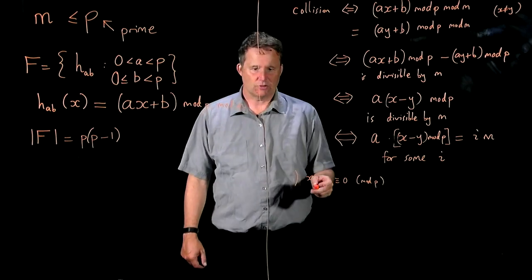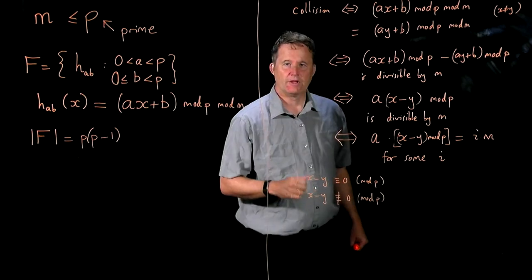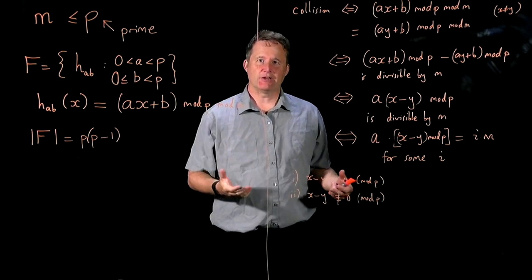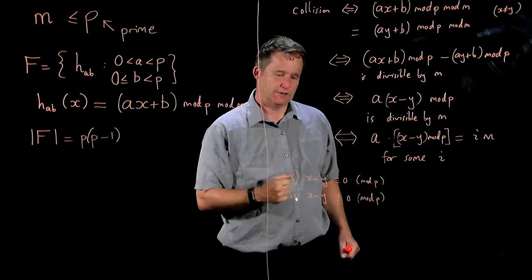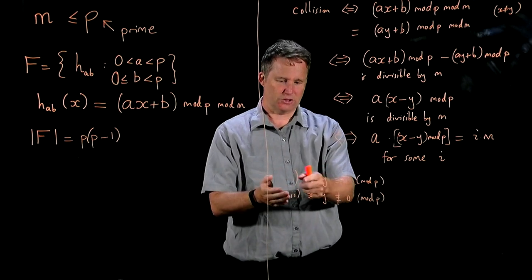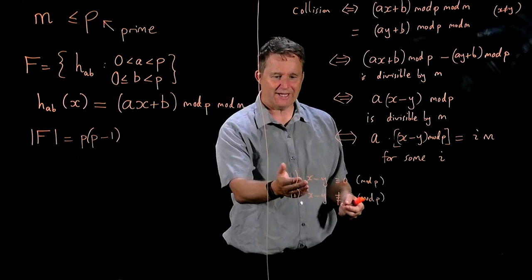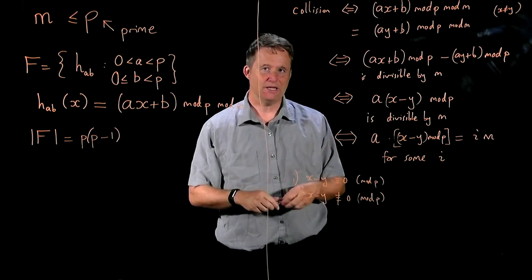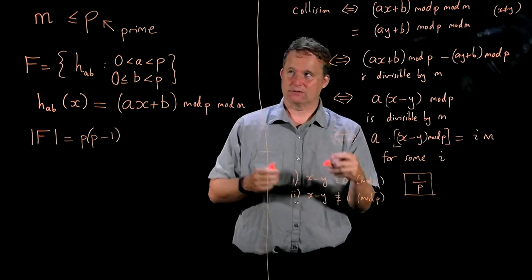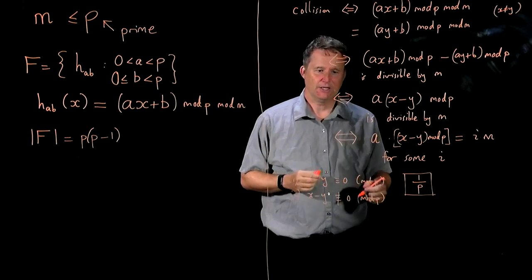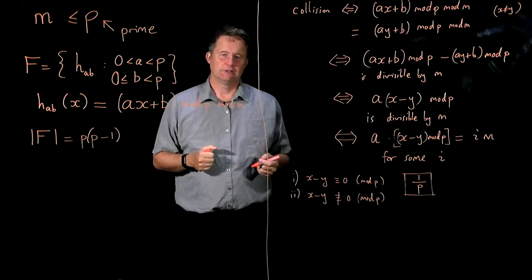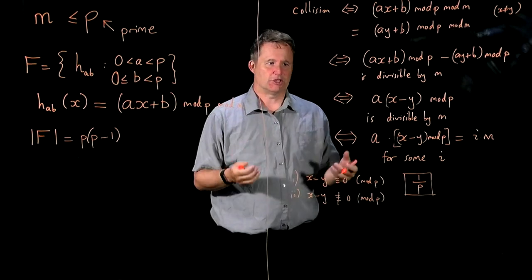Case 2 is where x and y don't have the same remainder mod p. We now have to work out what's the chance of having a collision. This is where we use the fact that p is prime — we haven't used that yet.